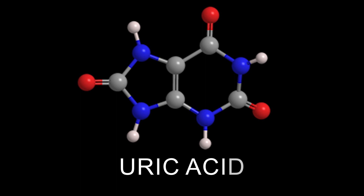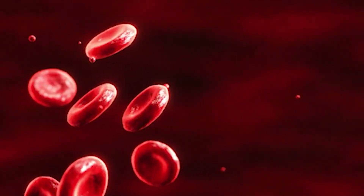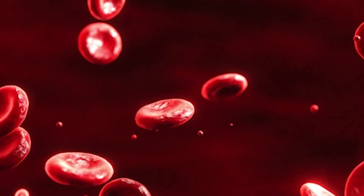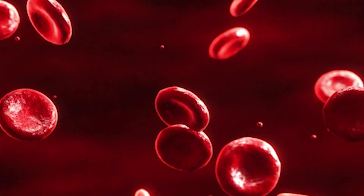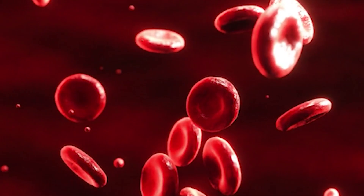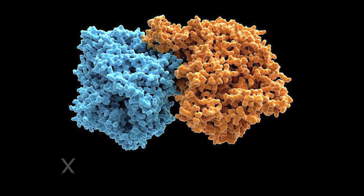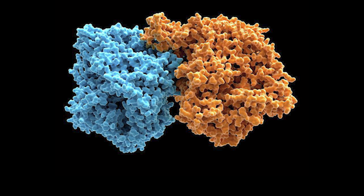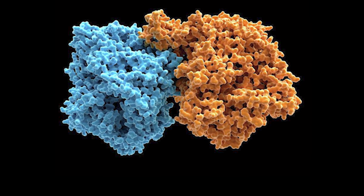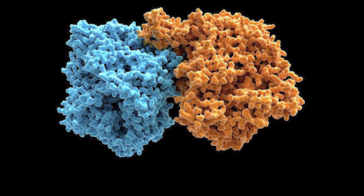Uric acid is a product of the metabolic breakdown of purine nucleotides that form the DNA, and it is a normal component of urine. High blood concentrations of uric acid can lead to gout and are associated with other medical conditions, including diabetes and the formation of ammonium acid urate kidney stones. Hypoxanthine is a naturally occurring purine derivative, occasionally found as a constituent of nucleic acids. Xanthine oxidase is an enzyme which catalyzes the oxidation of hypoxanthine to xanthine, and can further catalyze the oxidation of xanthine to uric acid.